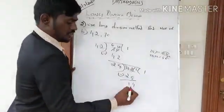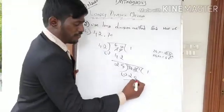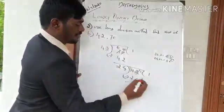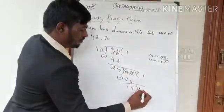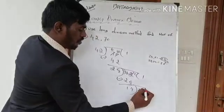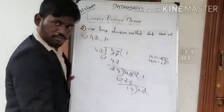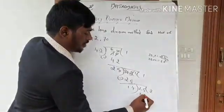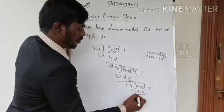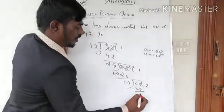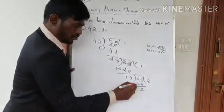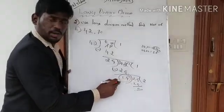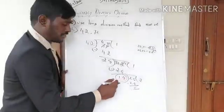Now divide 42 by 28. This remainder will not change further as a divisor. 14 ones are 14, 14 twos are 28. Subtract: 28 minus 28 equals 0. When the remainder is 0, the divisor at that point is the HCF.